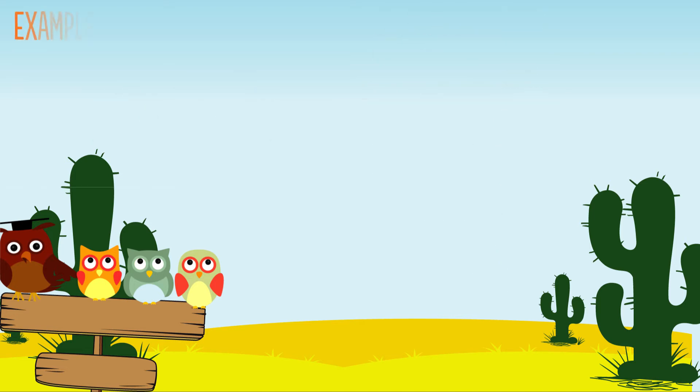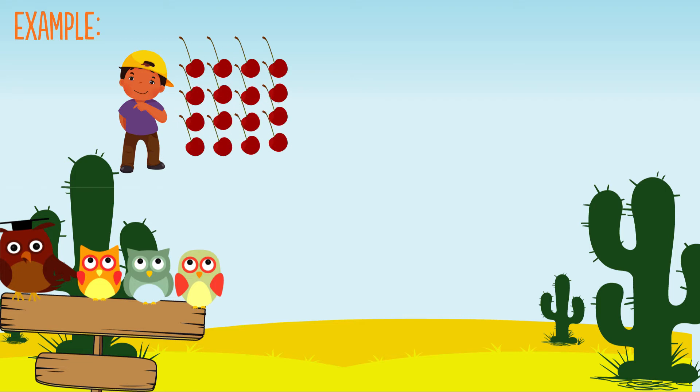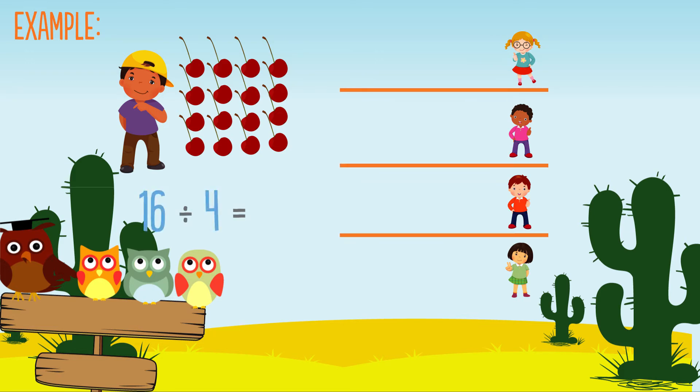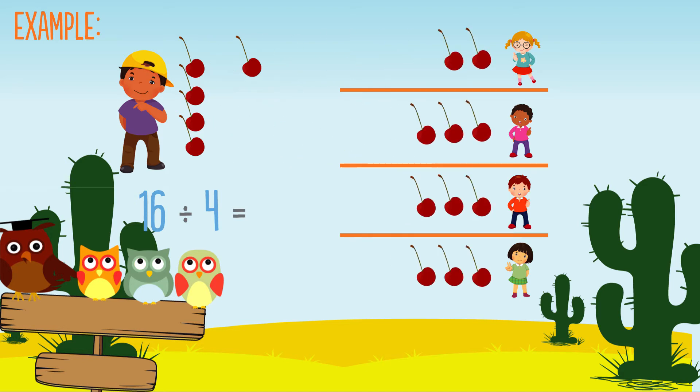Another example: Moe has 16 cherries and wants to divide them equally between his friends. This can be written as 16 divided by 4. To find the answer, we need to share 16 equally between four groups.